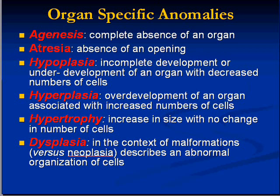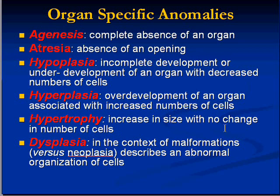Let's revisit a couple of basic definitions. These are not new — we defined them on day one — but with one exception, these are all associated with fetal anomalies as well. Agenesis refers to complete absence of an organ — renal agenesis means no kidneys. Atresia is absence of an opening: if you have a tubular structure such as a portion of the gastrointestinal system and there is no longer the ability to pass through the tube, that is atresia. Hypoplasia is incomplete development of tissues or an organ due to decreased numbers of cells. Hyperplasia is exactly the opposite — associated with increased numbers of cells. Hypertrophy is increased size with no change in the number of cells.